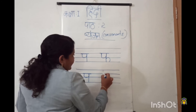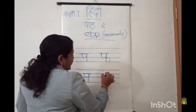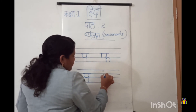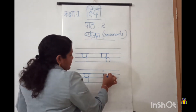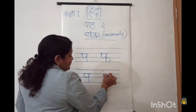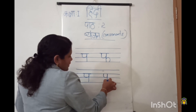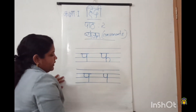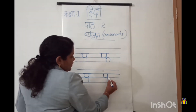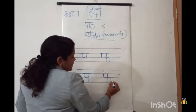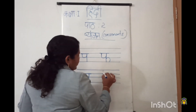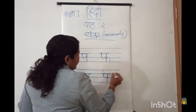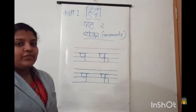Then for letter fa — keep your pencil on the second line. The same way, we will draw a curve in between the second line and third line. Then from the second line we will draw a standing line like this. Then from here we will draw another curve like this. Then last, we will draw a sleeping line on the top of the second line. So again, that's fa. Clear children?